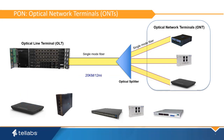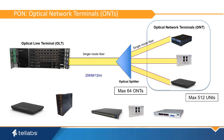The ONTs are extensions of the passive optical LAN switch, providing termination for the end user interface or access ports. In the Optical LAN, up to 64 ONTs can share a single PON interface from the OLT, providing a maximum of 512 user access ports.